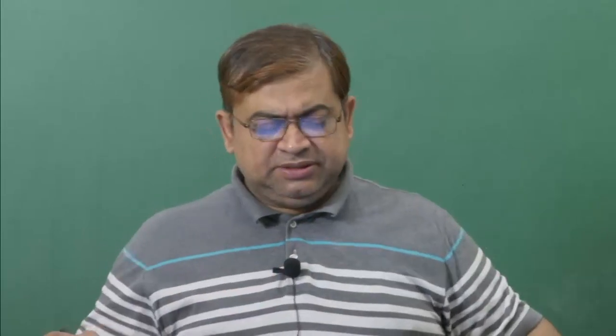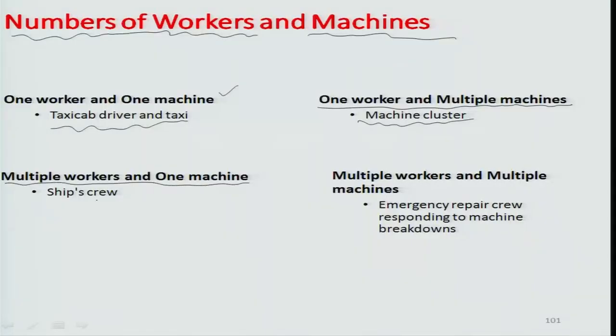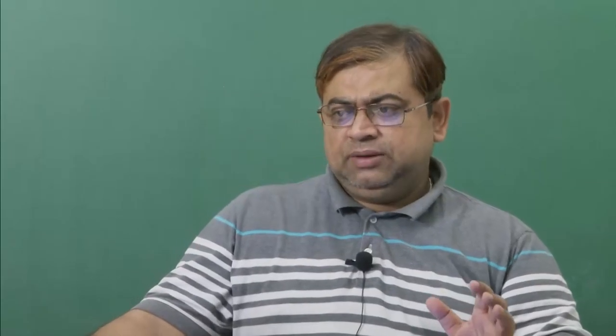There can also be a case of multiple workers and one machine. For example, running a large transportation unit like a ship, an airplane, or a train involves multiple stakeholders. An airplane typically has a pilot and co-pilot — more than one worker for one machine. In trains there may be three or four operators: two on the engine side, one on the signaling side, communicating with each other to run the whole system.